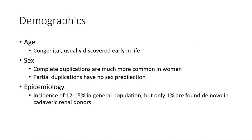Demographics: congenital, usually discovered early in life. Complete duplications are much more common in women. Partial duplications have no separate sex predilection. Epidemiology: incidence of 12 to 15% in the general population, but only 1% are found de novo in cardiovascular renal donors.